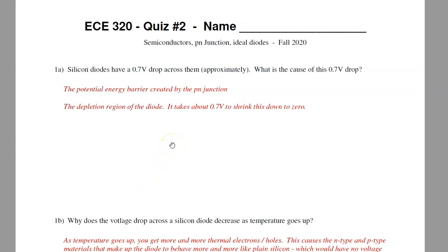This is the solution to quiz number two for ECE 320 electronics. The first question asks how come there's this 0.7 volt drop across silicon diodes? A couple ways to explain that. When there's a potential energy barrier across the PN junction, that barrier has to be overcome in order to get current flow. For silicon that's roughly 0.7 volts, so as current flows I lose that much voltage as I go across the diode.